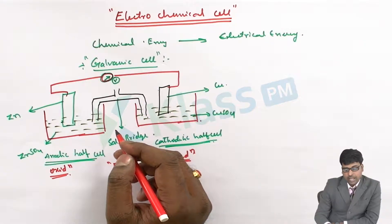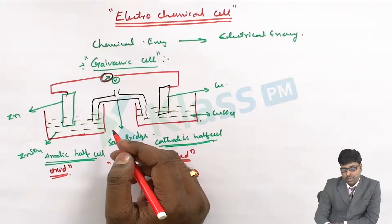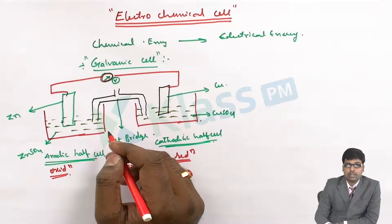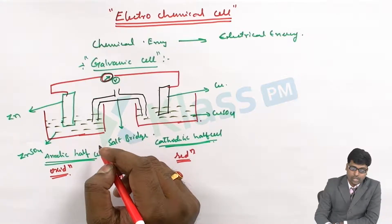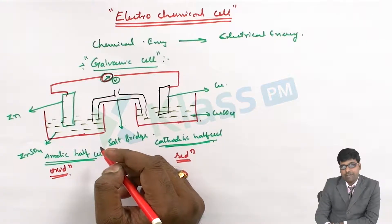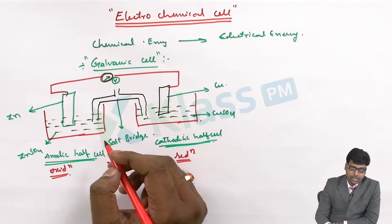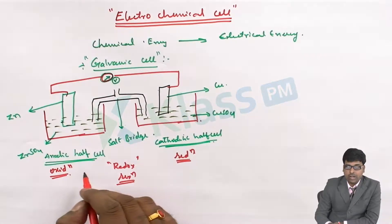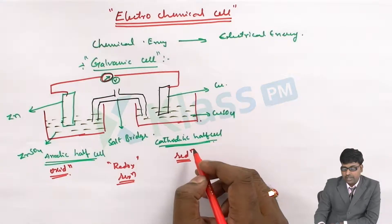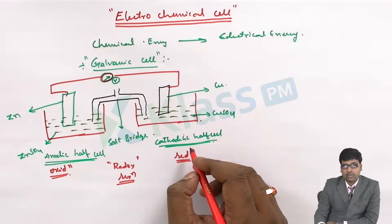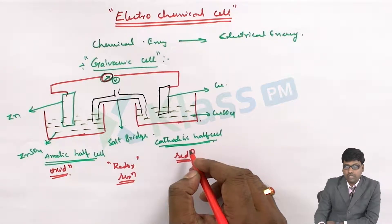Remember: every time when we need to draw or represent this electrochemical cell, on the left side we write the anode and on the right side we write the cathode. So the first is the anodic half cell and the second one is the cathodic half cell.